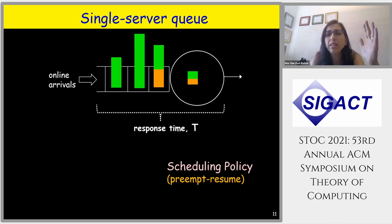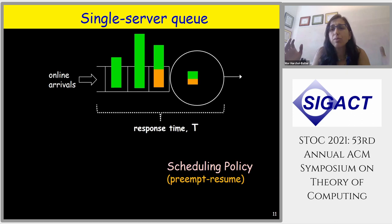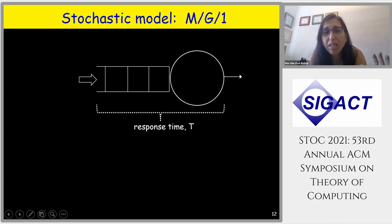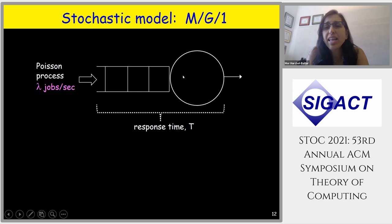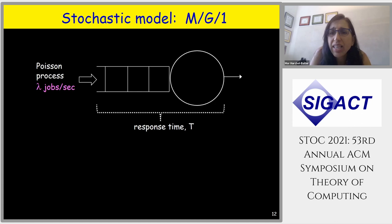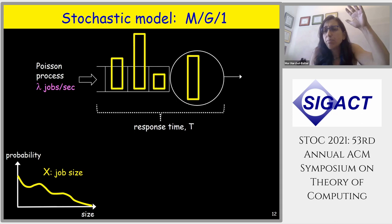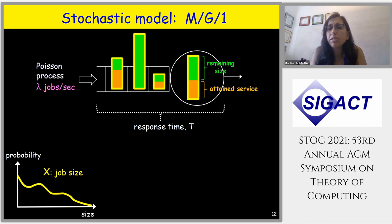We're interested in response time — the time from when a job arrives until it's finally finished — and specifically the average response time over all jobs. The simplest stochastic model is the MG1: a single server (the '1'), with Markovian arrivals (a Poisson process at rate lambda jobs per second), and general job size distribution. X is the random variable for job size, with all different sizes coming from this distribution.